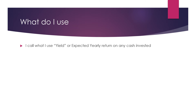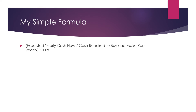So what do I use? I call mine yield. I basically look at the cash I'm putting down — meaning not just the down payment, but all the cash required to purchase and make the asset produce or rent ready — and then the expected cash I'm returning. I call it yield; some people may call it cash on cash. So here's the formula: it's expected yearly cash flow divided by cash required to buy and make ready, times 100% to turn it from a decimal to a percentage. That's why I use yield — kind of treat each asset like a bond, where I want to know what the yield is going to be.